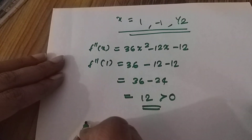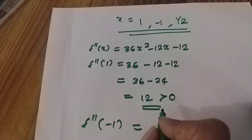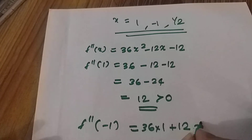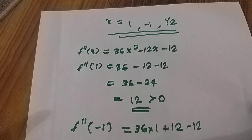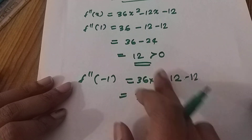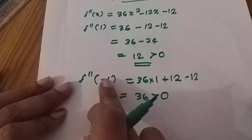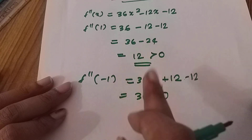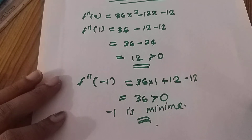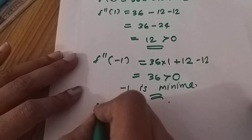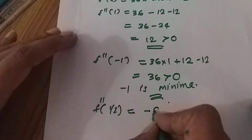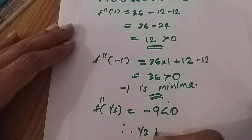Since f''(−1) = 36(1) + 12 − 12 = 36, which is greater than 0, x = −1 is a minimum. And since f''(1/2) = −9, which is less than 0, x = 1/2 is a maximum.